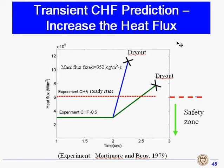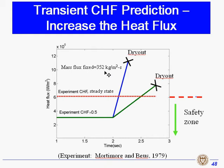This is our simulation result. The x-axis represents time, and the y-axis represents heat flux. During the simulation, the max heat flux is constant at 352. The red line is the critical heat flux at steady state, and we obtained it from the experiment.